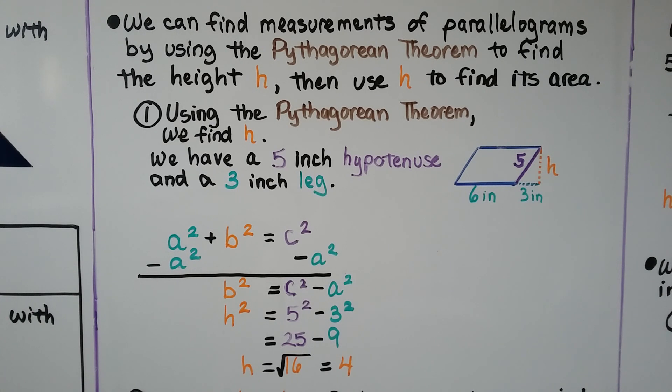So we have a 5-inch hypotenuse and a 3-inch leg. We do a squared plus b squared equals c squared. We want to solve for b squared as h squared. So we subtract the a squared from each side and we get b squared is equal to c squared minus a squared. So that means we have h squared equals 5 squared minus 3 squared. And that's just 25 minus 9, which is 16. We remove this exponent by putting a radical sign around the 16 and the square root of 16 is 4. So we know h equals 4.